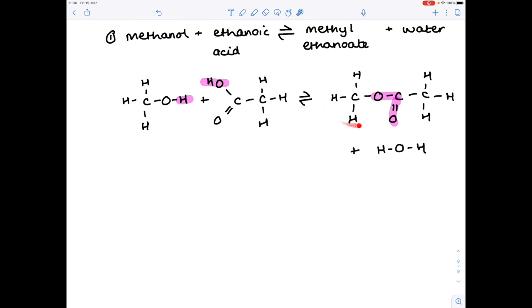So this over here is your ester, which is methyl ethanoate. Let's do a second example now. Let's try ethanol and propanoic acid. It's a reversible reaction again. The first part of the ester's name comes from the alcohol, so it will be ethyl. The second part comes from the carboxylic acid, so it will be ethyl propanoate. We make water.